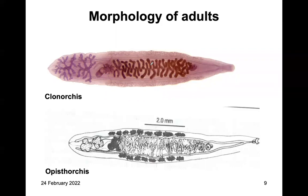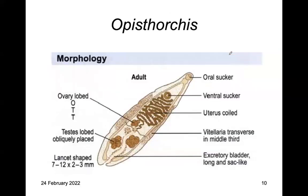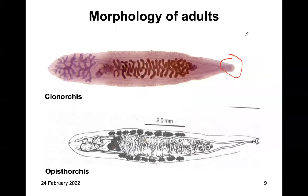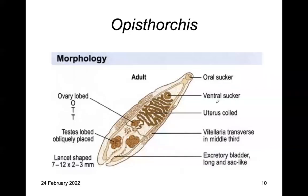This is the morphology of adults of Clonorchis, as seen in the picture. They are about two millimeters in length. You can see they have a testis and branched uterus, and this is the anterior end with the suckers. There is an oral sucker and a ventral sucker, a uterus, and lobed testis obliquely placed. These are the vitellaria on the transverse lateral side, and there is an excretory bladder sac-like structure for excretion.